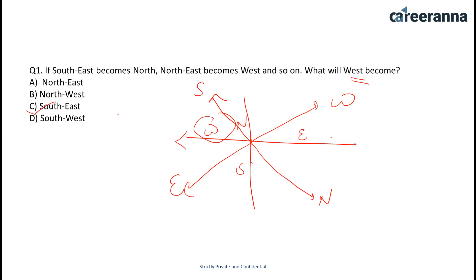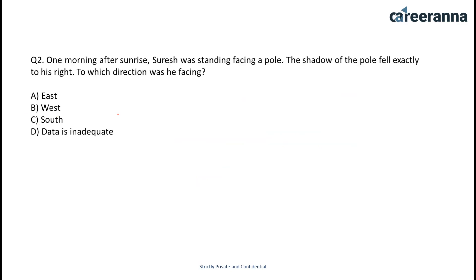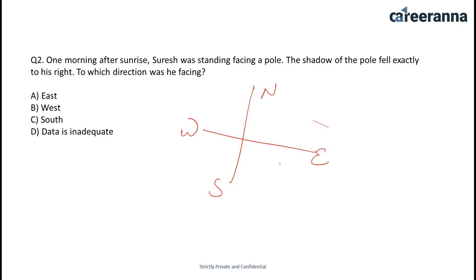The next question is: one morning after sunrise, Suresh was standing facing a pole. The shadow of the pole fell exactly to his right. In which direction was he facing? As we know, the Sun rises in the east, so this is the east direction, this is west, this is north, and this is south.